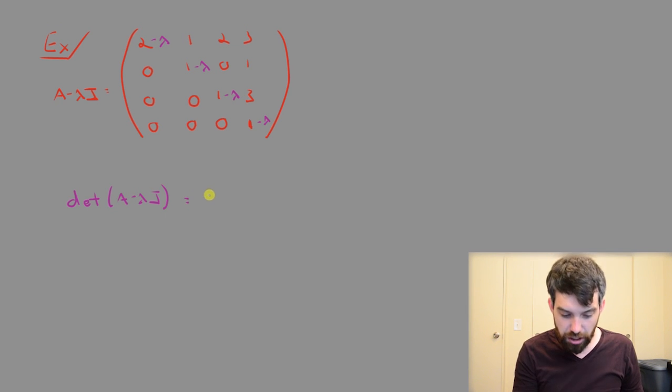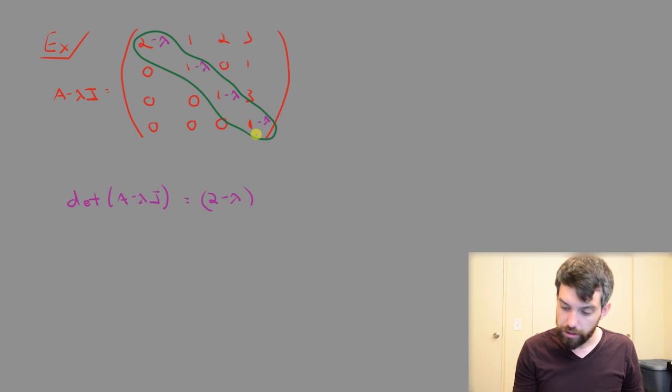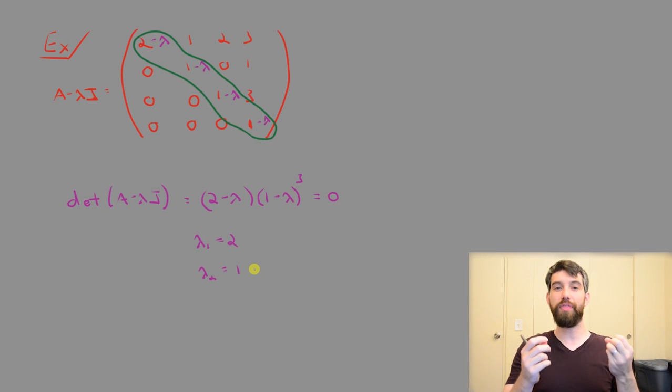So indeed, this is just going to be (2 minus lambda), since I'm just going to be going along this main diagonal here. So (2 minus lambda), and then it looks like (1 minus lambda) occurs 3 times, so I'm going to make it cubed, and that's going to be equal to 0. And so you get two different eigenvalues, maybe I'll call them lambda 1 equal to 2, and lambda 2 is equal to 1, where the lambda equal to 1, that's got this so-called algebraic multiplicity of 3.